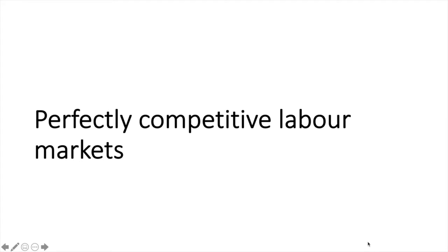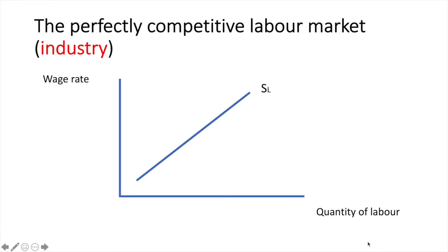Now let's get into the diagrams, starting with the perfectly competitive labour market from the industry perspective. While the individual supply curve of labour is backward bending, the supply curve of labour of an entire industry within a perfectly competitive labour market is upward sloping. The reason for that is that as wages increase, more and more people are willing to offer their labour in this particular occupation. They may switch from other occupations into this one and thus increase the quantity of labour supplied.